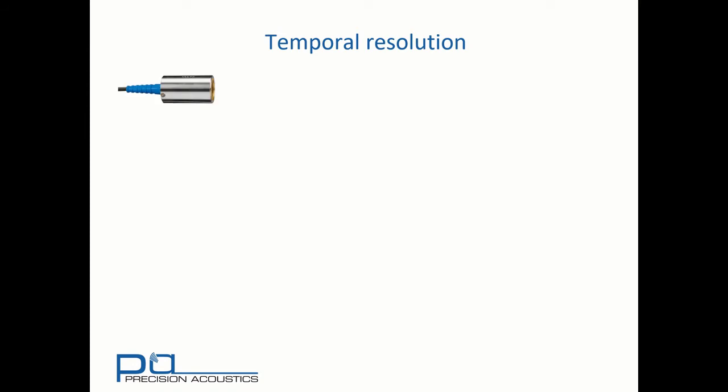Consider here a transducer that's being used to interrogate a sample. We'll be looking at this sample pulse echo. So as the signal radiates from the transducer, some of that signal will reflect from the front surface of the sample and will be shown on the time trace.